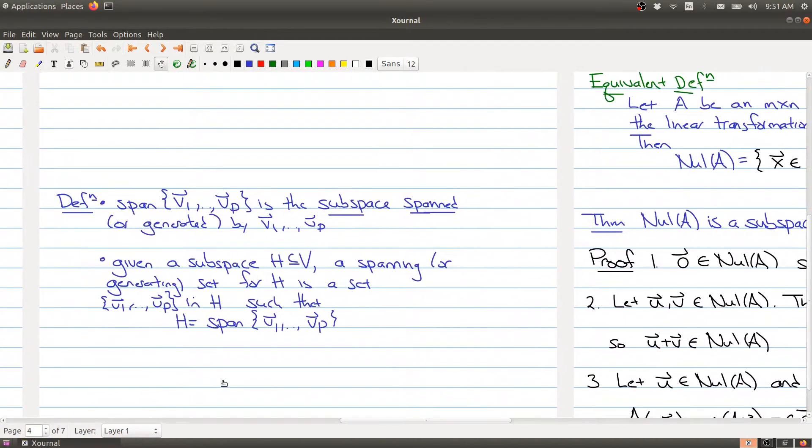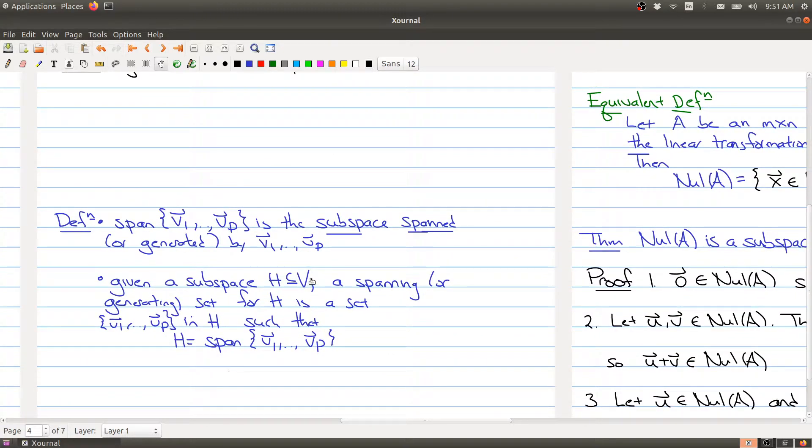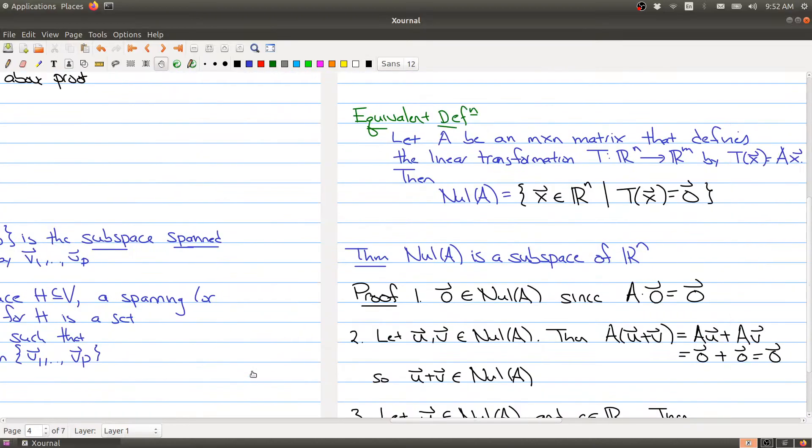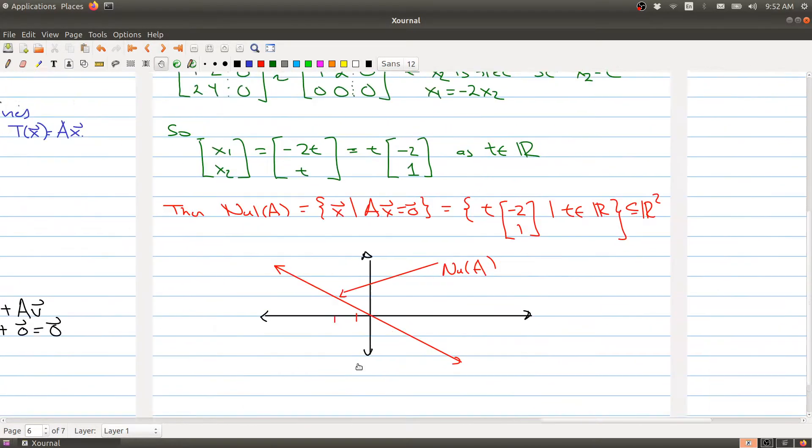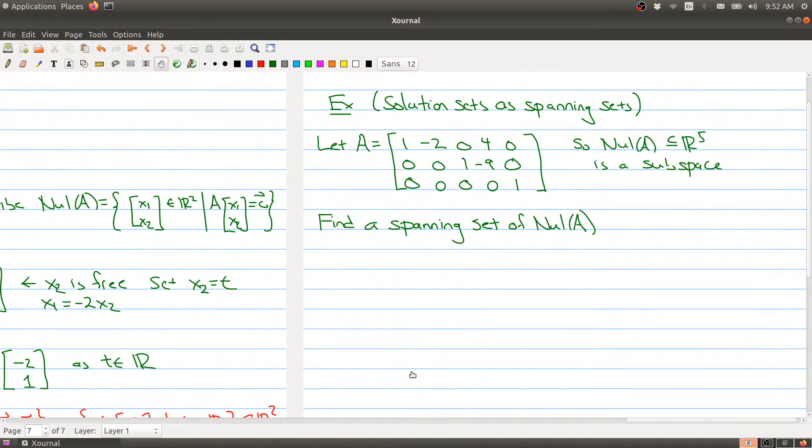If you have a subspace, then a spanning set is a collection of vectors that are inside of H such that you can write every element in H as a linear combination of those vectors. So we're looking for a collection of generators for your subspace.